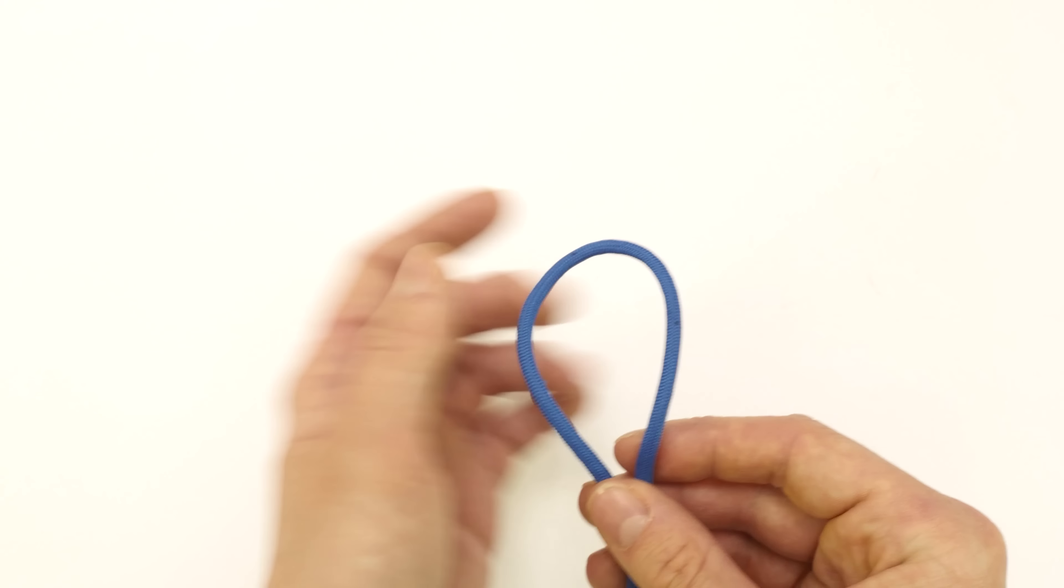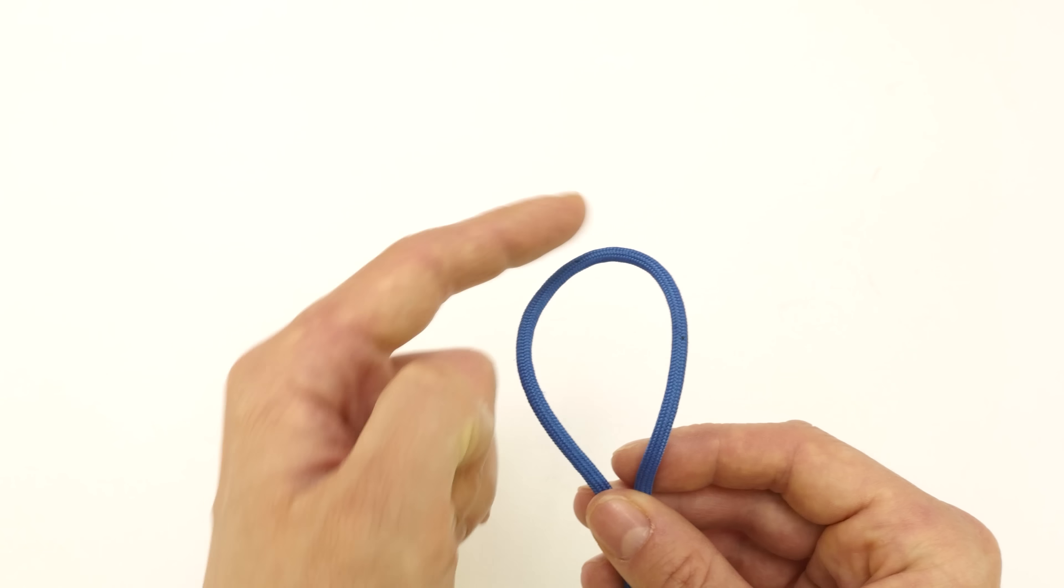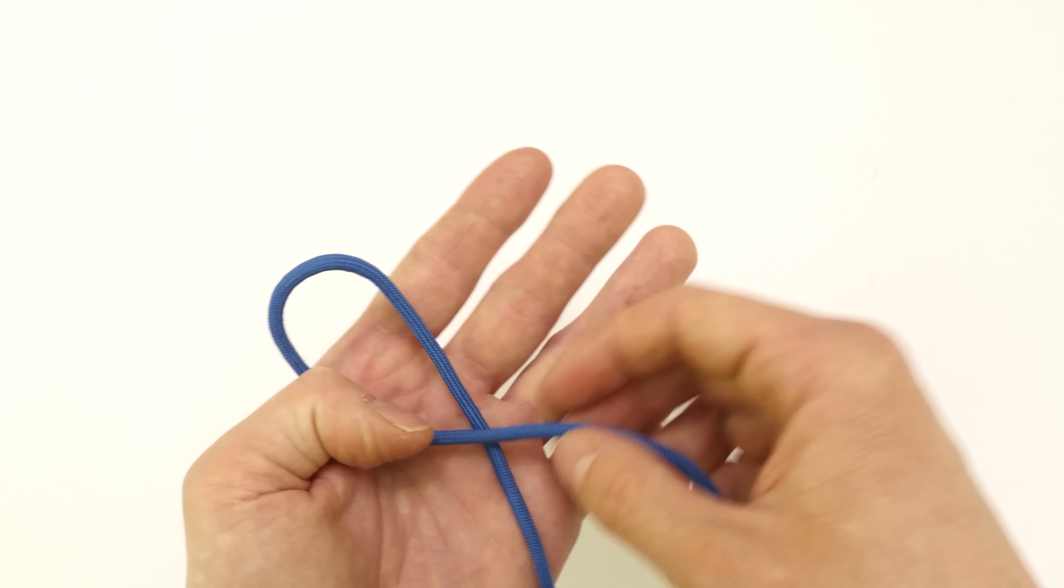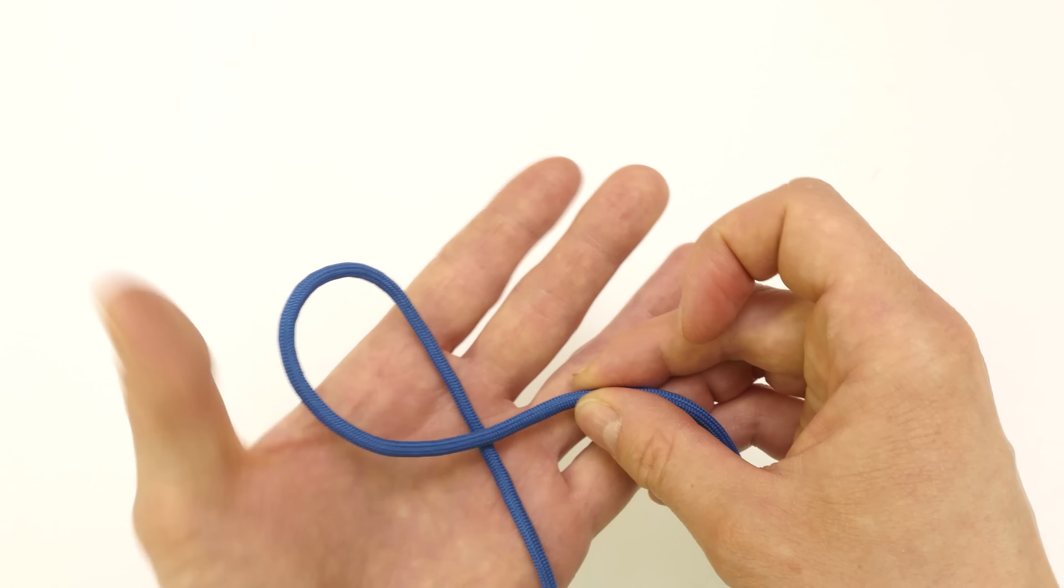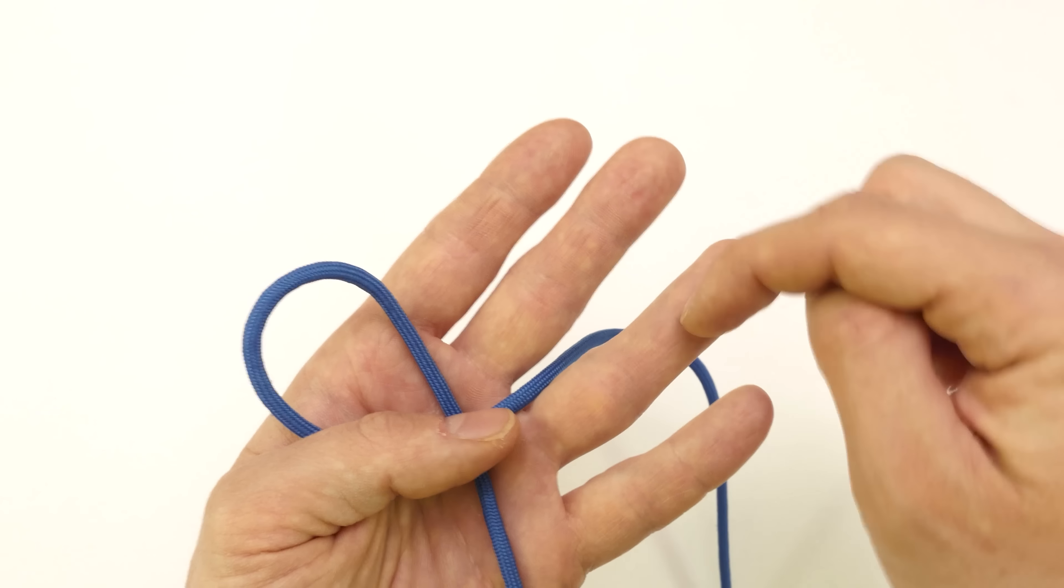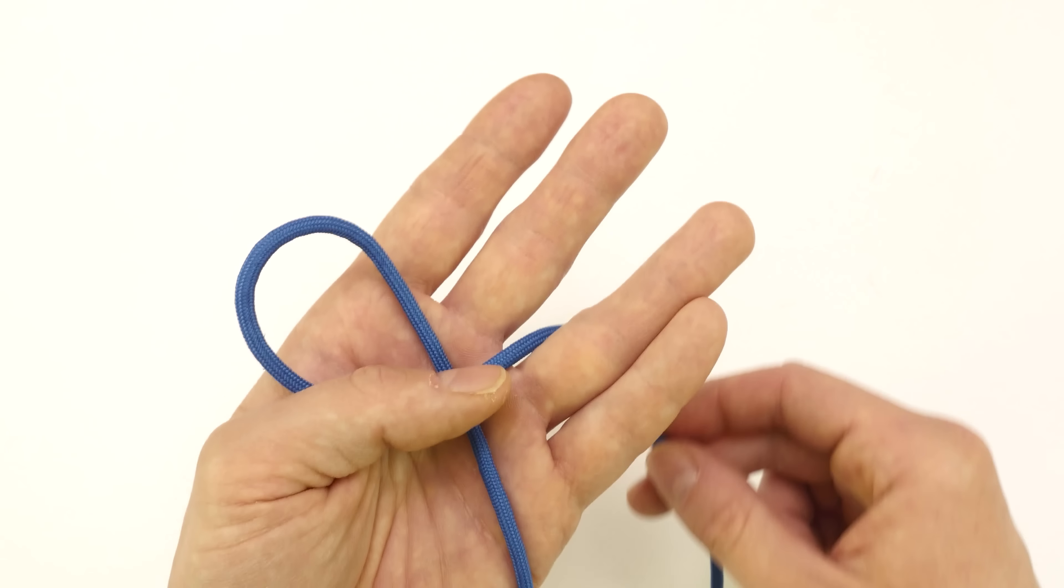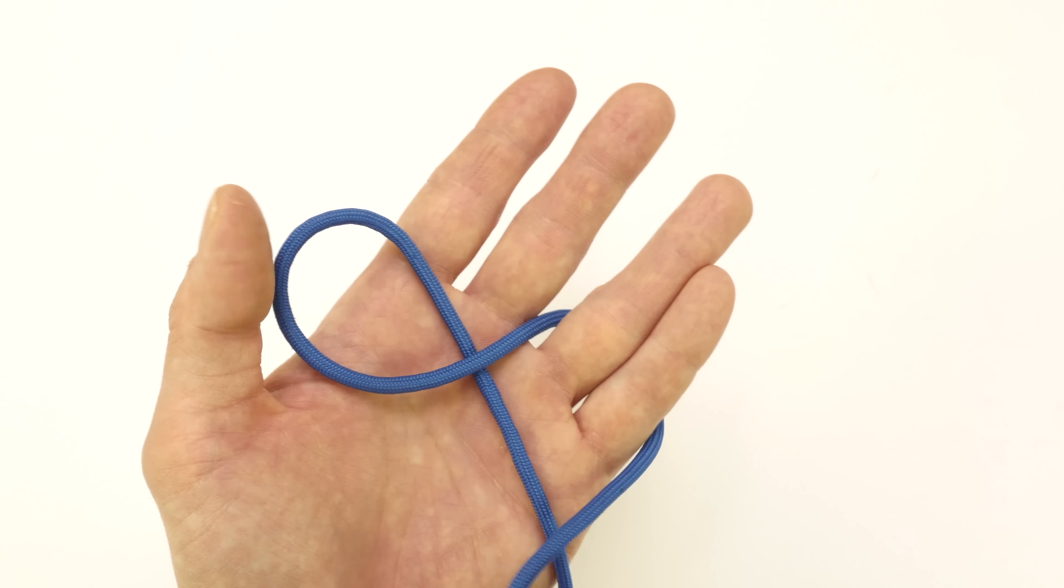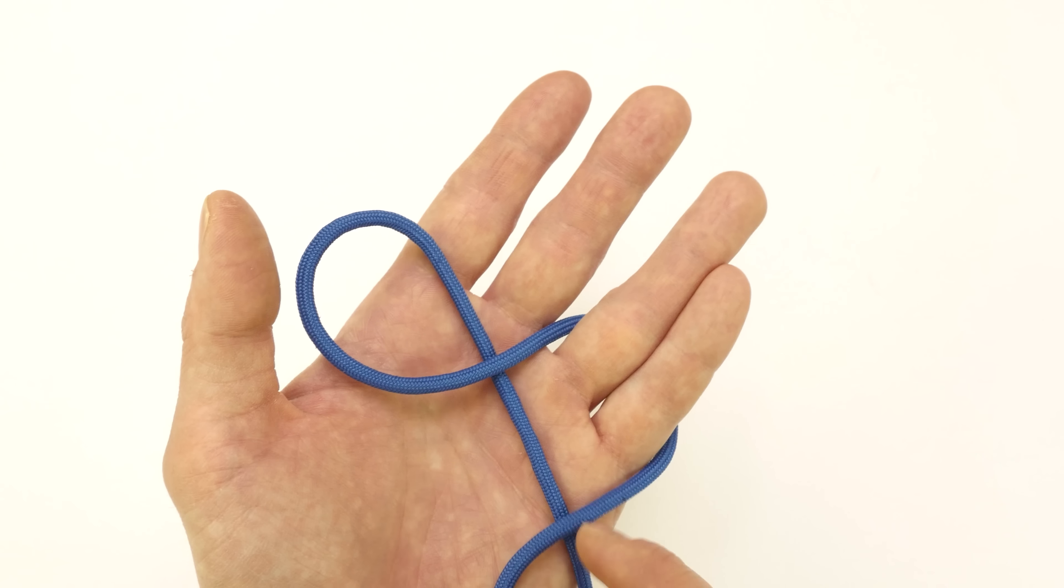We're going to start at about a middle point in our cord, and we're going to twist it to create a loop, like this. Place your cord, this end, between the two fingers, then under these two fingers, and over the other end, the standing end.